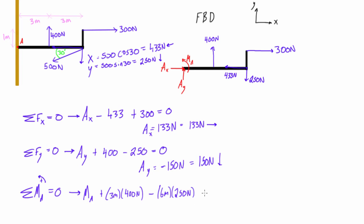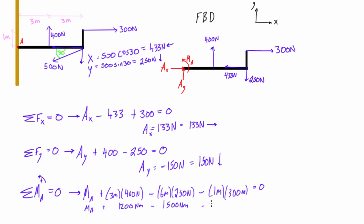The 433-newton force won't create a moment because its line of action passes through point A. The 300-newton force at a perpendicular distance of 1 meter will cause a clockwise (negative) moment. So the moment equation is: MA plus (3 × 400) minus (6 × 250) minus (1 × 300) equals zero, which gives MA plus 1200 minus 1500 minus 300 equals zero, simplifying to MA minus 600 equals zero.